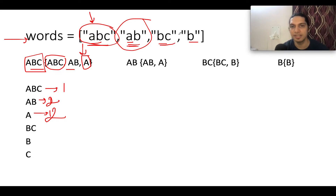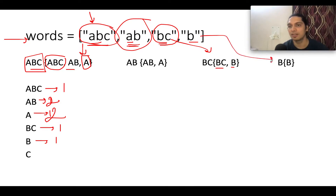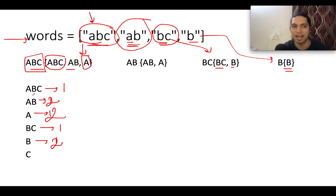Next we have 'bc' as an input string. 'bc' has two prefix strings: 'b' and 'bc'. The score of 'b' gets updated to one and the score of 'bc' gets updated to one. Next we have 'b', and we only have one prefix string which is 'b', so the score of 'b' gets updated to two.